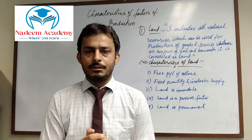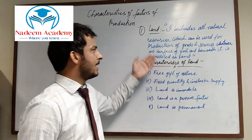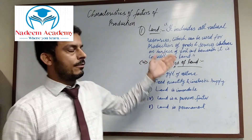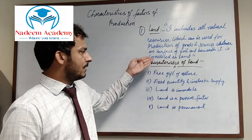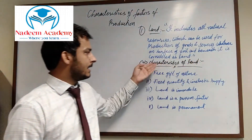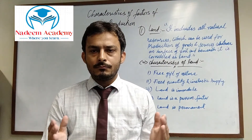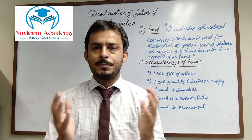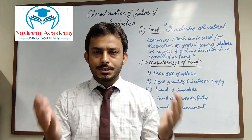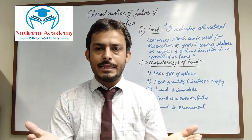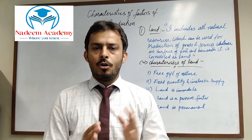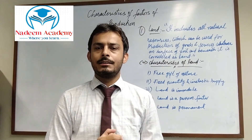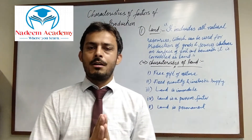The first factor of production is land. It includes all natural resources which can be used for the production of goods and services. Whatever is on the surface of the soil and beneath it is considered as land. So land not only includes what is available on the surface — like buildings, agriculture crops, forests, rivers — but also natural resources beneath the land like natural gas, petrol, and oil. This is the complete definition of land in terms of economics.